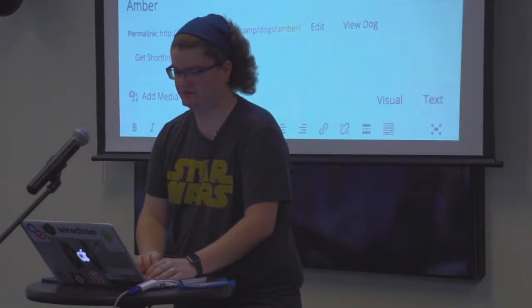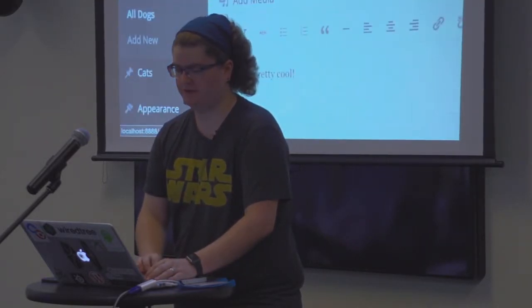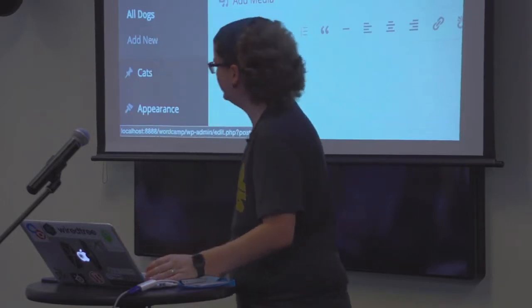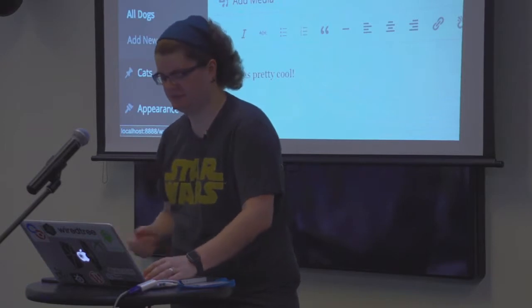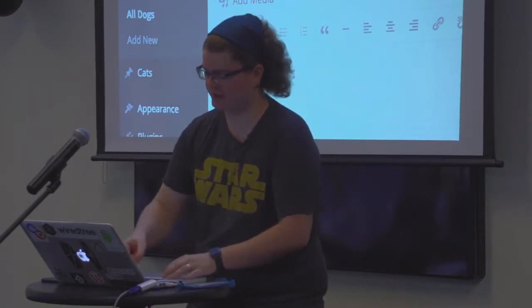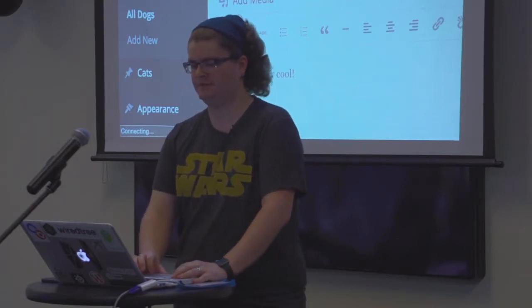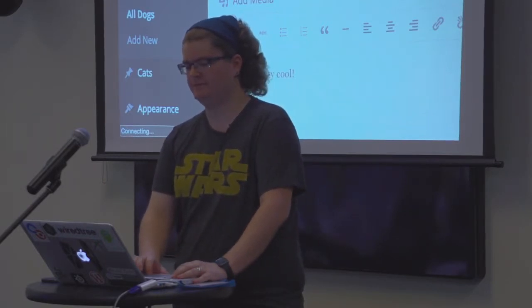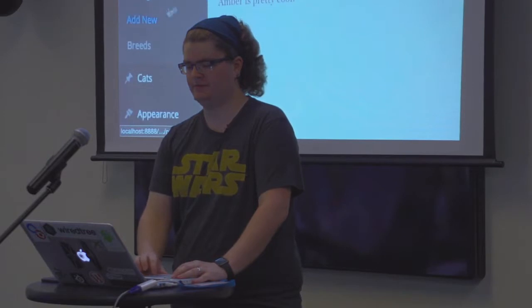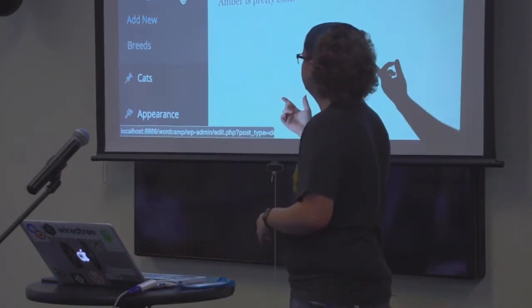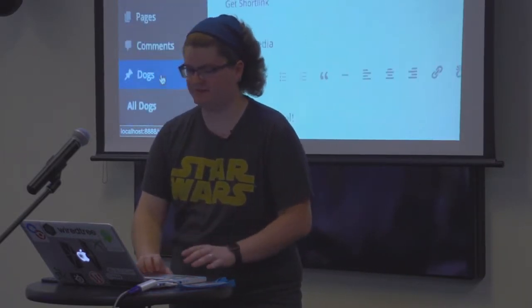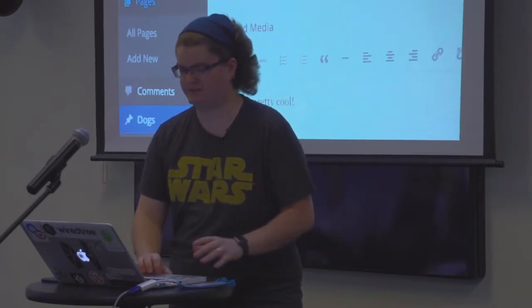Right now, looking at our dogs, we have 'all dogs' and 'add new' — but I want to be able to add breeds. Since we just uncommented the taxonomy registration, it should be loaded into WordPress. Give it a refresh. And there we go — we now have breeds available under dogs. Check out cats — no breeds on cats. Look at pages — no breeds on pages. Likewise on posts — no breeds on posts. This taxonomy is unique only to our dog post type.